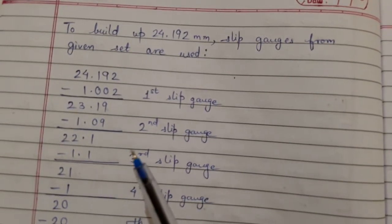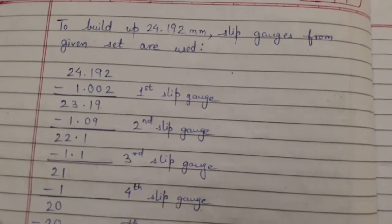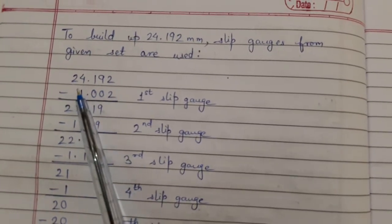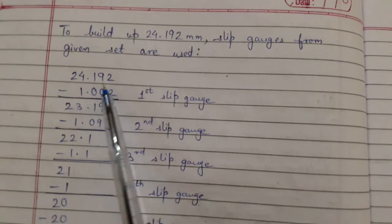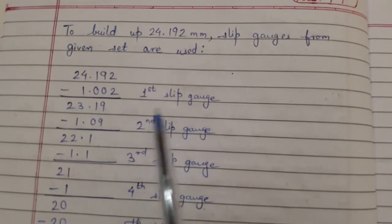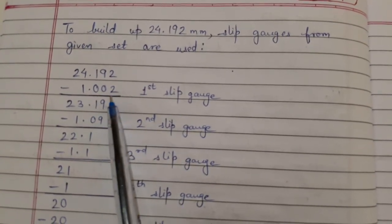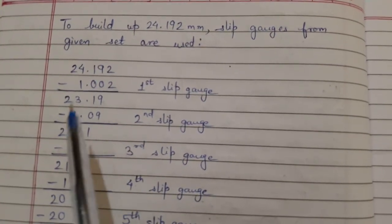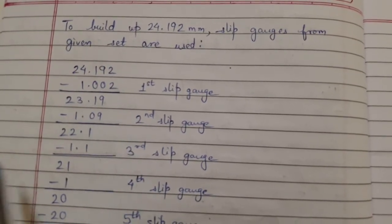We have this dimension 24.192. First slip gauge we have taken is 1.002 so that the third decimal place is satisfied. Now we have the new dimension and we will try to satisfy the second decimal place with the help of the second slip gauge.